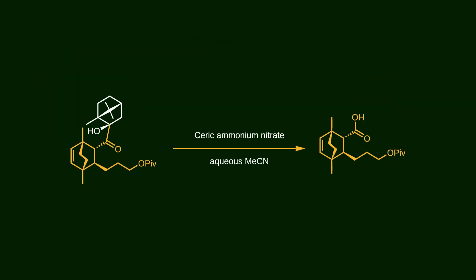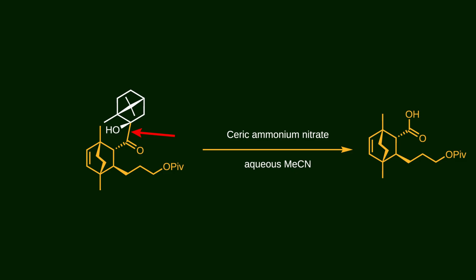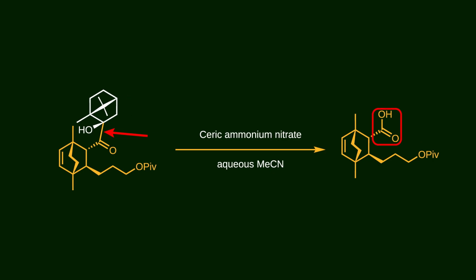After the precise installation of the chiral centers, we no longer need the chiral auxiliary. So camphor is removed from the molecule. Ceric ammonium nitrate is a strong oxidizing reagent that's frequently used for removing protecting groups. As you can see, it cleaves this carbon-carbon bond and converts the ketone into a carboxylic acid.